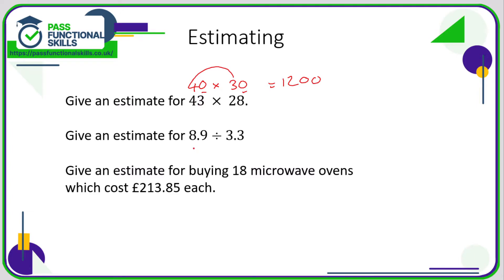In this next example, 8.9 — why don't we just call that 9, rounding to the nearest whole number — and 3.3, let's just round that down to 3. And 9 divided by 3 equals 3.